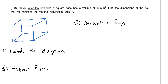In this video homework guide, my plan is to cover more problems that have to do with modeling and optimization, and I will start off with example number three. For example number three, I have an open top box with a square base with volume 13.5 inches cubed, and I need to find the dimensions of the box that will minimize the material required to build it.